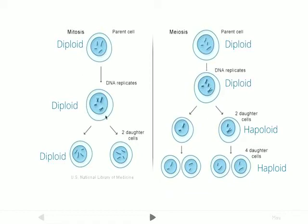When they reproduce through mitosis, you're going to get two daughter cells, and each of them is going to have four individual chromosomes. Because they have a full set of four, we call them diploid cells. So in mitosis, we're going from diploid cells to diploid cells. These are all the regular cells in your body — things like heart cells, nerve cells, and skin cells. They all go through mitosis.